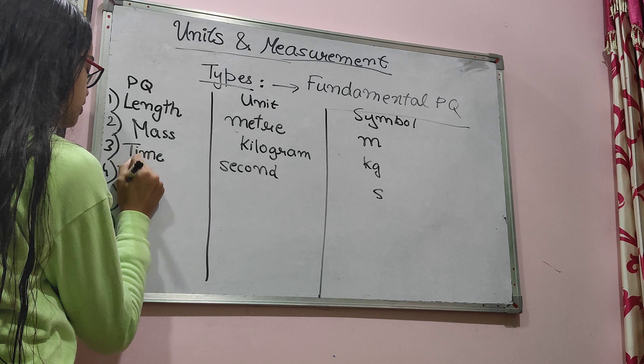Next we have temperature — unit is Kelvin, symbol is capital K. After that, electric current — represented by capital A (ampere). Then luminous intensity, which is the least used in physics. And finally, amount of substance, which we use more in chemistry than in physics.